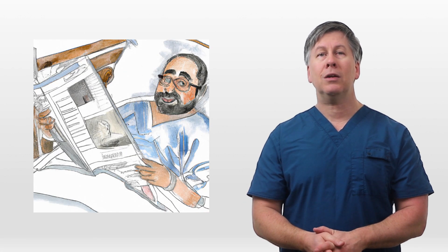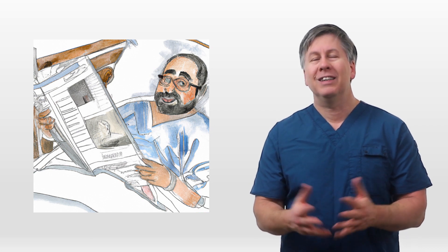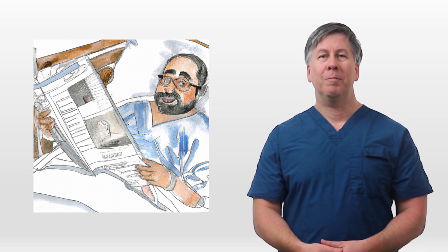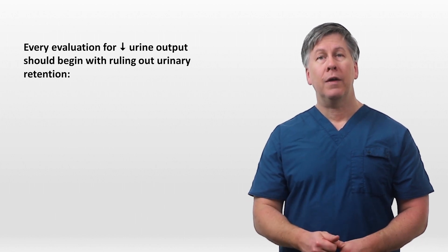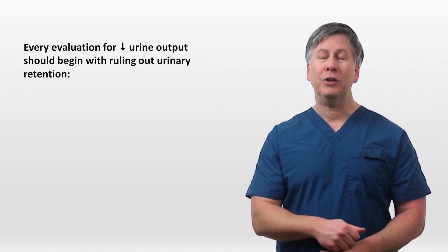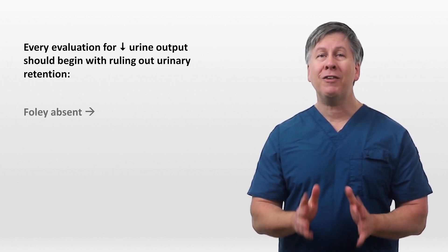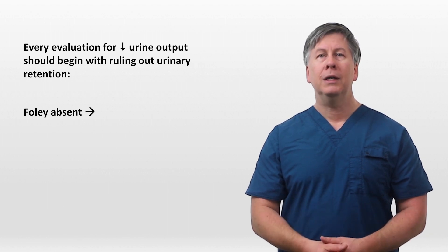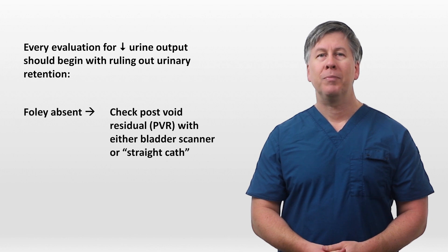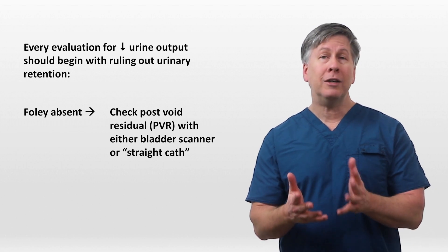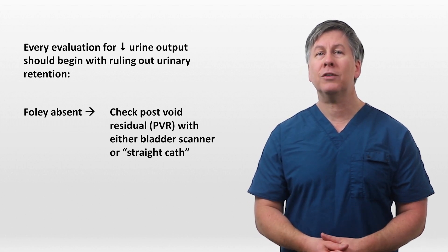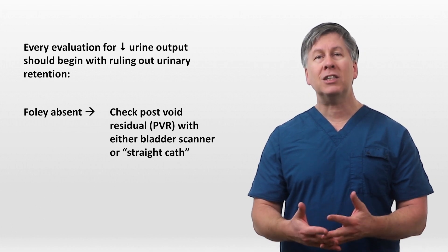Now we've reached Mr. Bashar's room and he's just hanging out in the hospital bed looking okay. Every evaluation for low urine output should begin with ruling out urinary retention — because it's common, it's easy to treat, and you will get worse very quickly if you give either fluids or diuretics. If the patient does not have a Foley catheter or other tube draining the urine, check what is called a post-void residual — that is, how much urine remains in the bladder after the patient tries to void on their own. A PVR can be checked non-invasively with a bladder scanner or invasively with a straight cath.